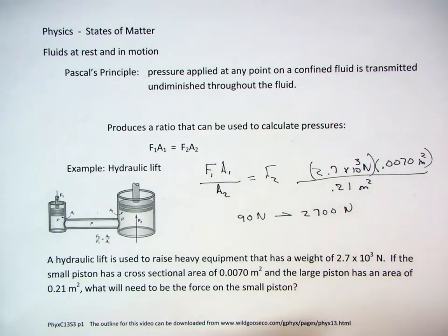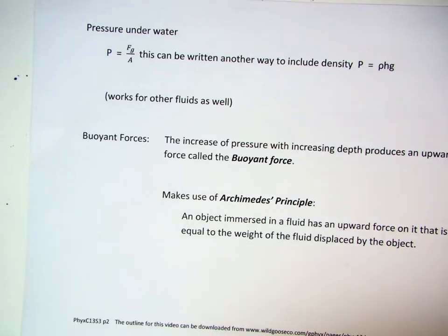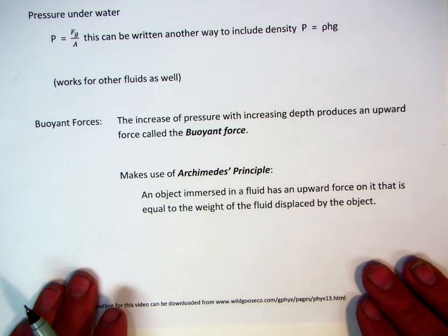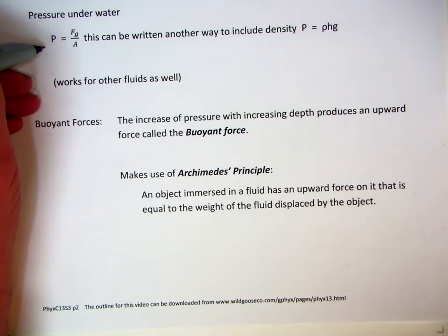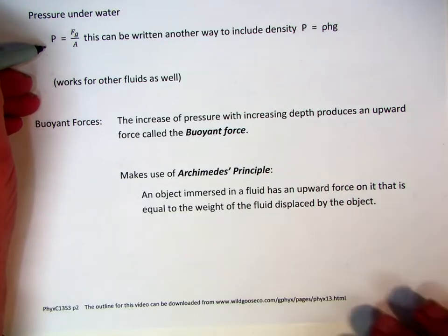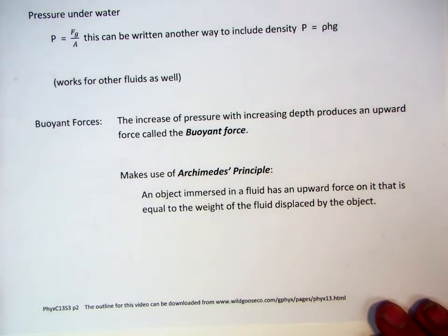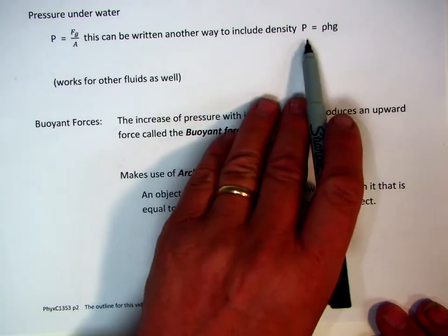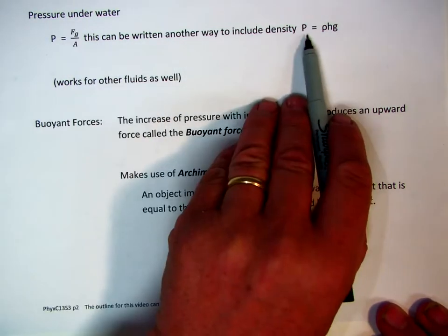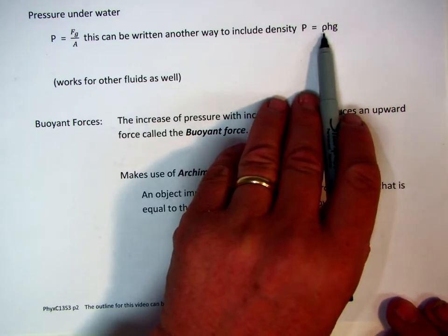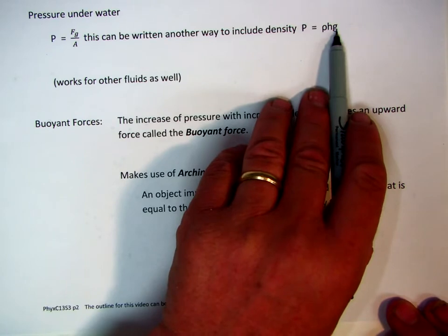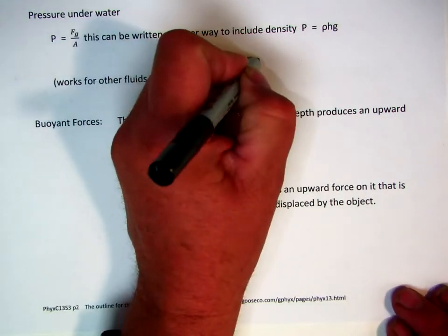Let's take a look at how that works with pressure underwater. If we define what pressure is, it's the force of gravity divided by the area. It can be written in another way. Pressure is equal to the density of the substance, the fluid, multiplied by the height, multiplied by gravity.